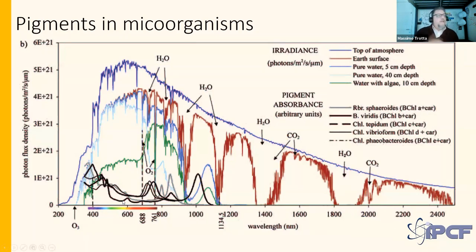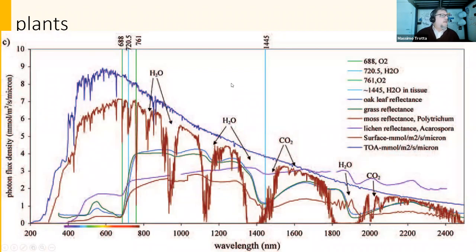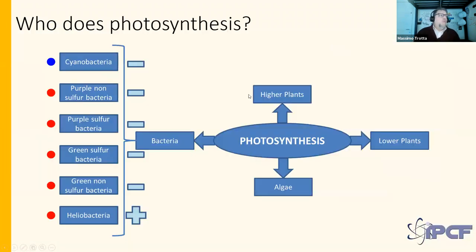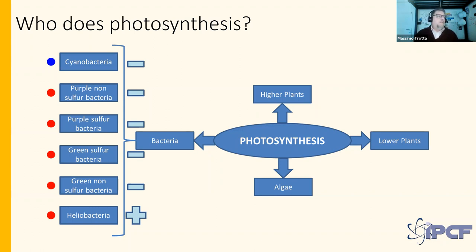This covers all visible and infrared light — the largest amount of photons that reaches Earth. Who does photosynthesis on Earth? There are higher and lower plants, algae, and bacteria. I will mostly concentrate on bacteria because they are the simplest system. In 30 hours you cannot have a complete course on photosynthesis.